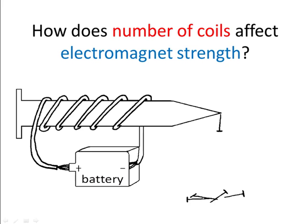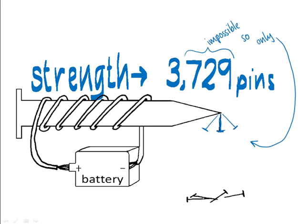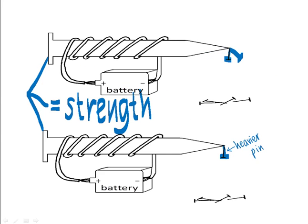We've discussed two problems with this investigation. One is that you don't get half numbers of pins or fractions of pins. Another is that some pins might be lighter or heavier than others. How do we reduce those limitations?